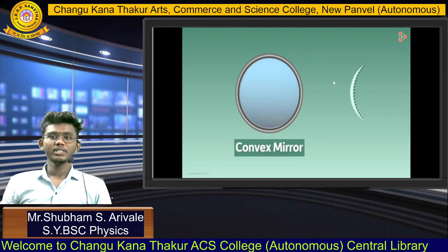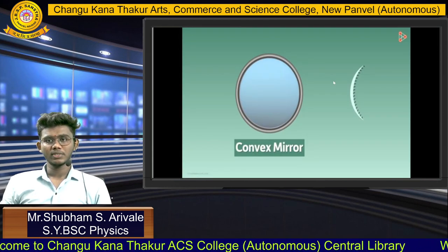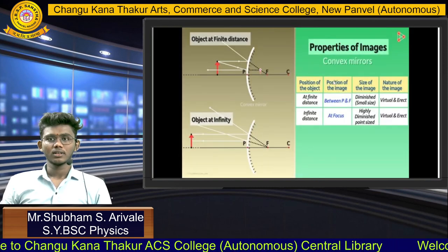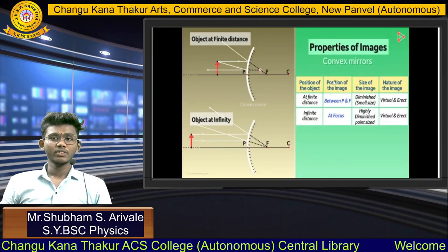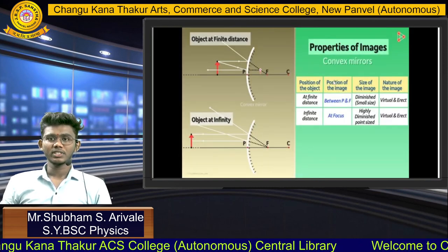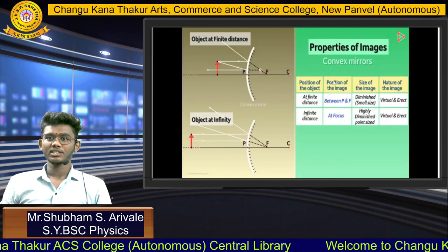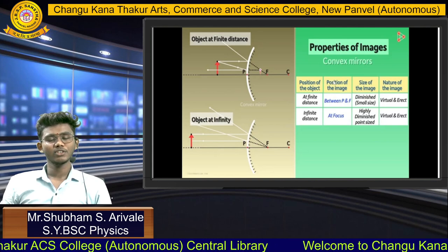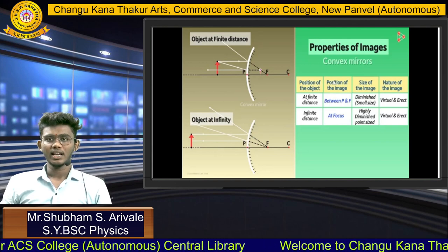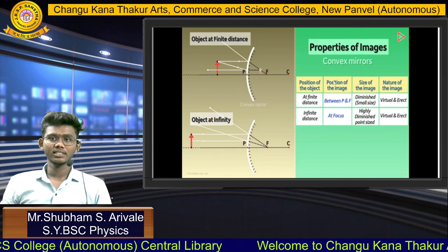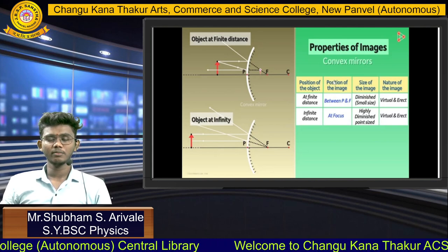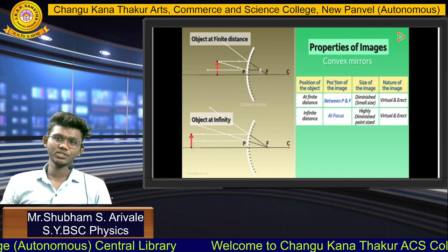The second type of Spherical Mirror is a Convex Mirror. Properties of image of a Convex Mirror: at a finite distance, the nature of an image is virtual and erect. At an infinite distance, the nature of an image is also virtual and erect.